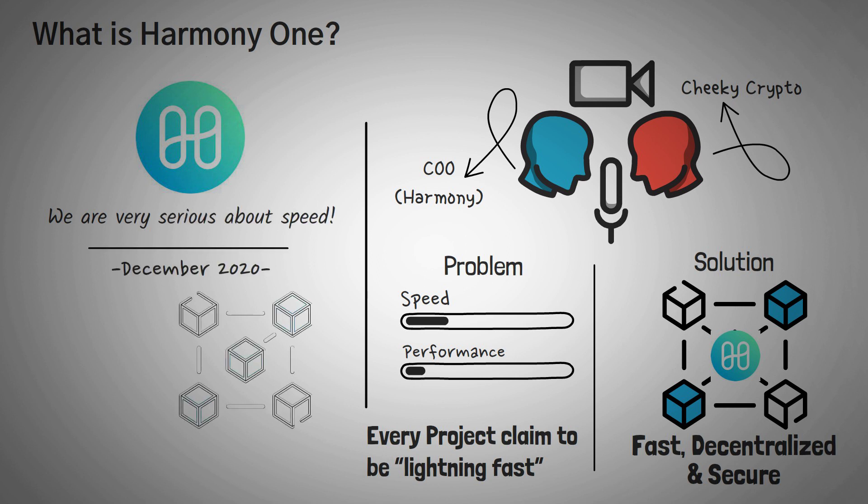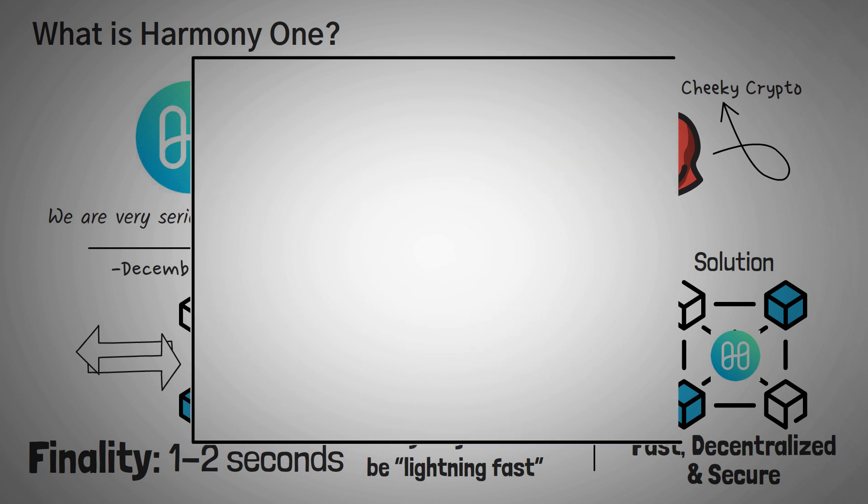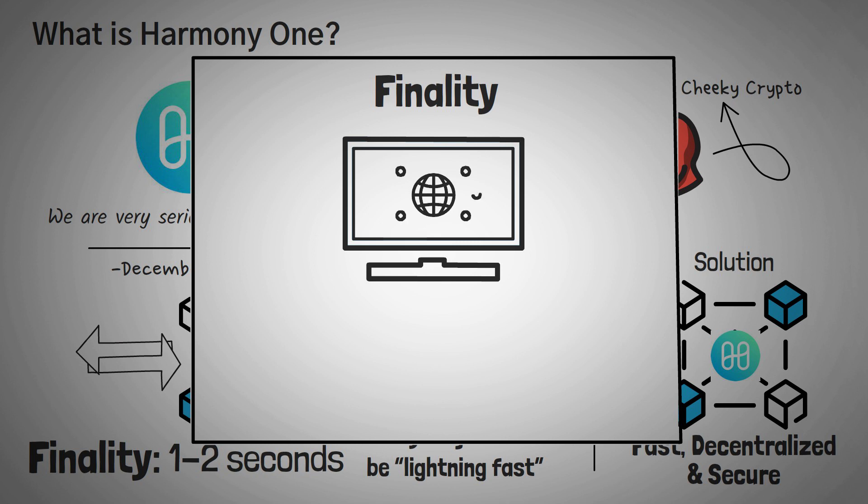As of December 2020, they announced that transactions were achieving finality within two seconds at a maximum, and usually taking finality around one second, significantly faster than most blockchains. Finality is the technical term on which everyone in the network agrees that your transaction is confirmed and it cannot be undone.